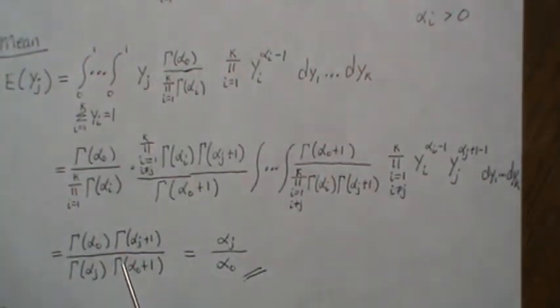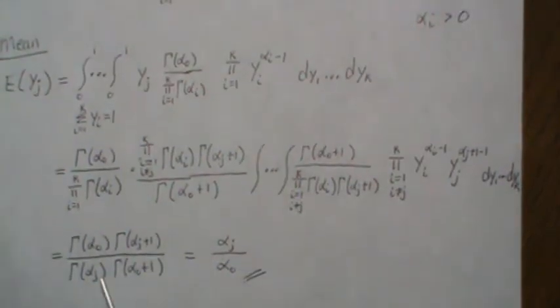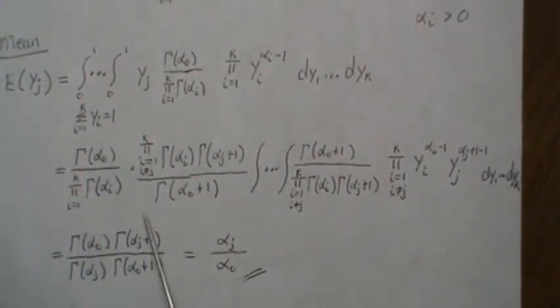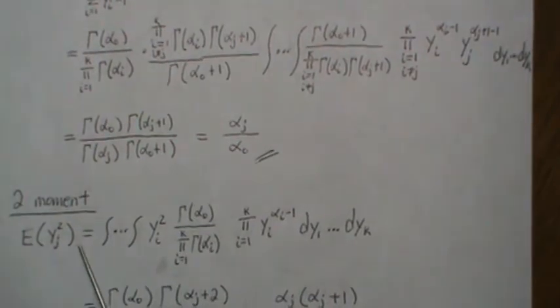This piece right here is alpha zero times gamma of alpha, and so those cancel leaving alpha zero here. This is alpha j times gamma of j, and so those cancel leaving alpha j. This is the mean of a Dirichlet distribution of one of the variables yj. Now the second moment is very similar.